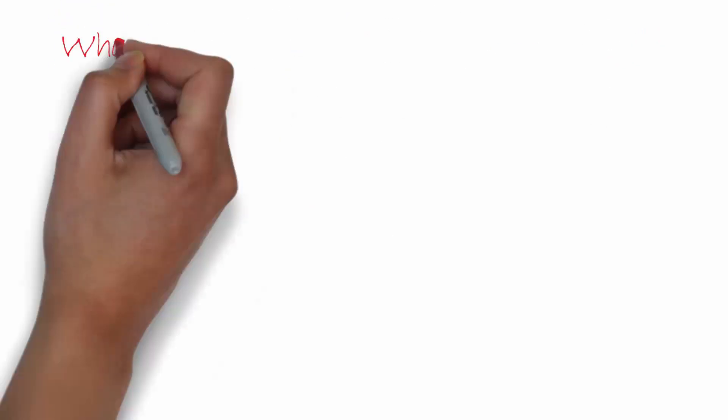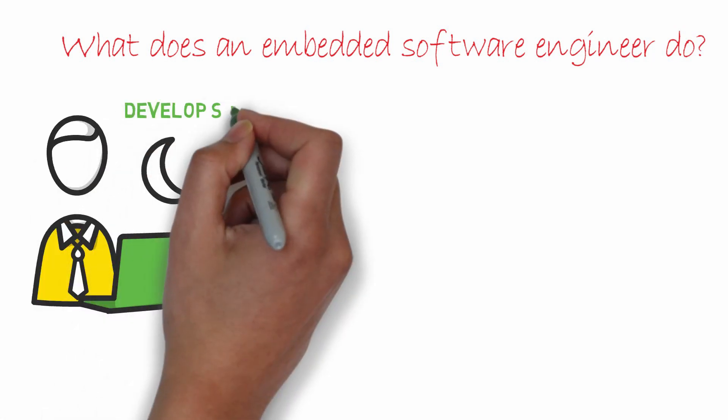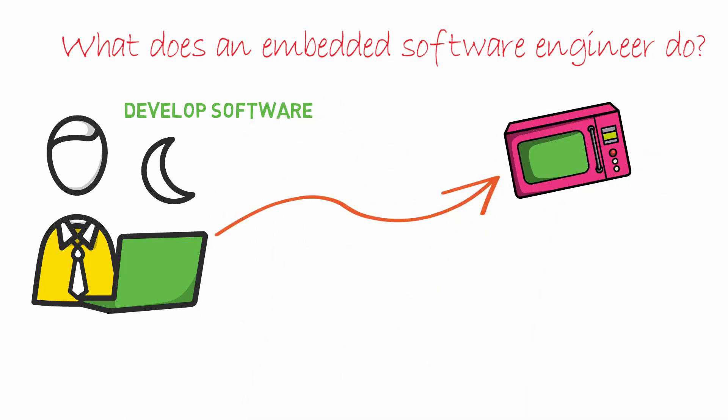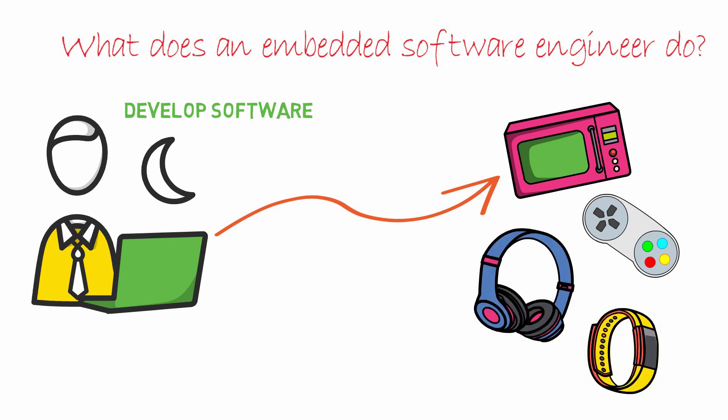So what does an embedded software engineer do? The simplified answer would be: an embedded software engineer develops software that runs on devices like microwave ovens, Xbox controllers, blood pressure monitors, Bluetooth headphones, smartwatches, and other such devices that have custom hardware.